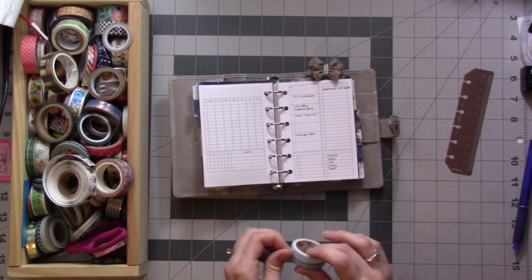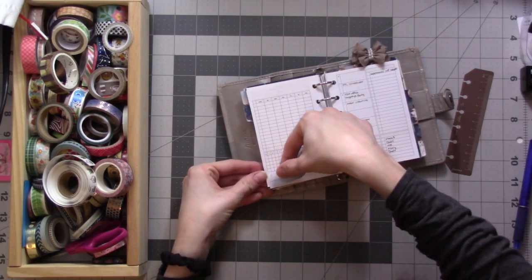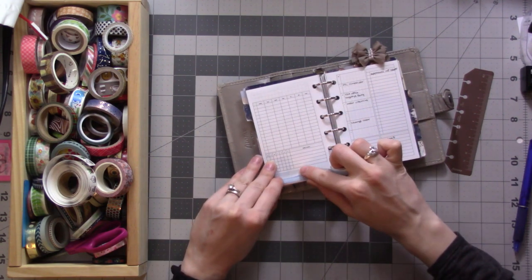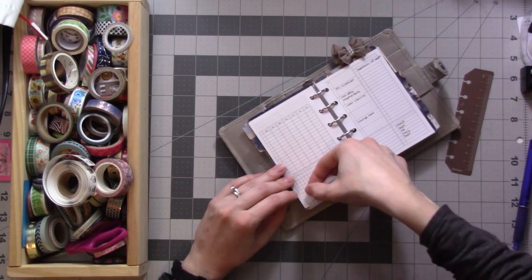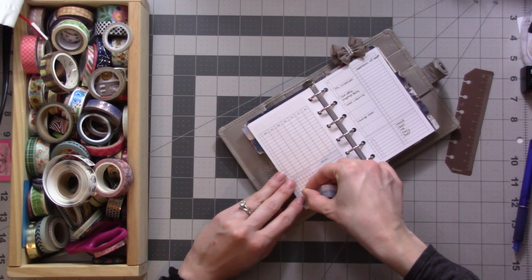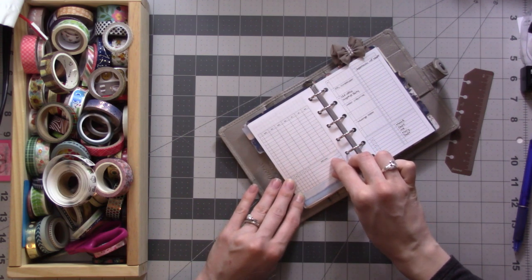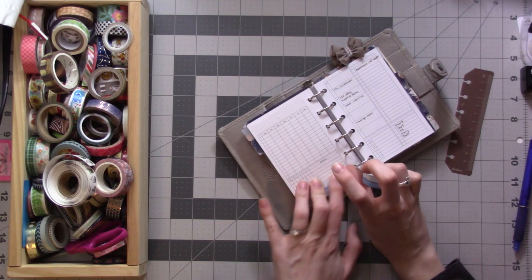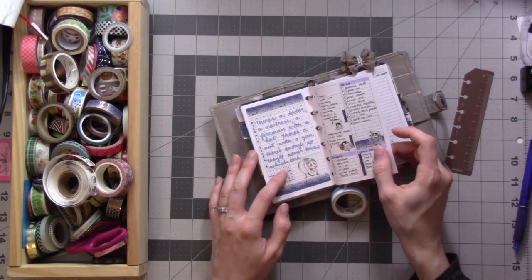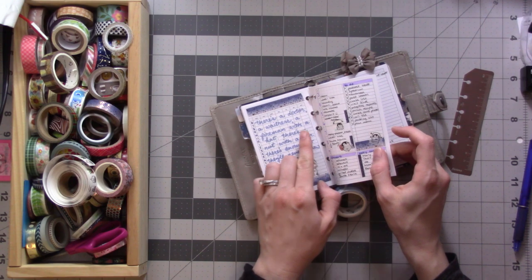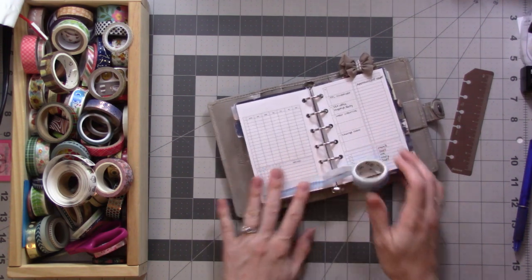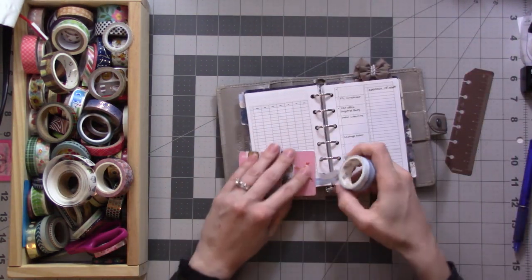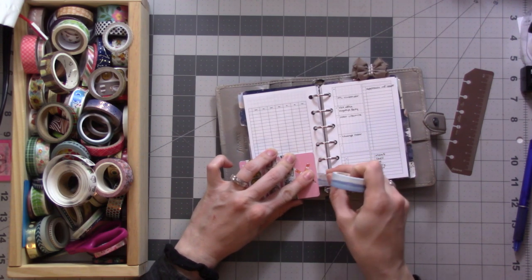I got new washi tape! I ordered some washi tape from AliExpress, which if you're not familiar with it's where you get all the cheap Chinese stuff. It came after maybe a month—I think it was on November 11th that I placed the order and then it came this last Thursday. So less than a month, not too bad. I got a couple different washi tapes and this is one of them and I'm going to try this out.